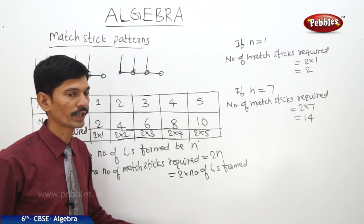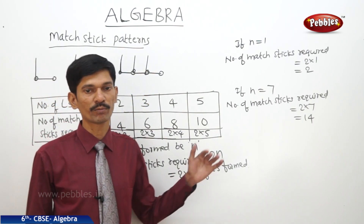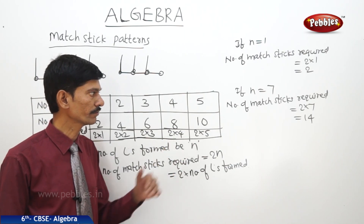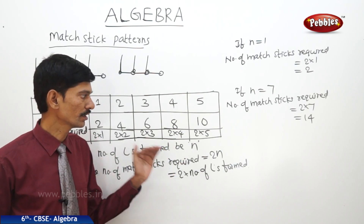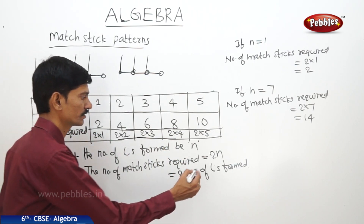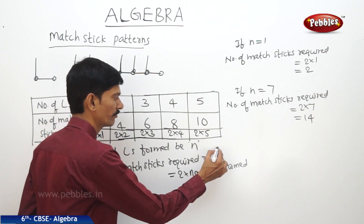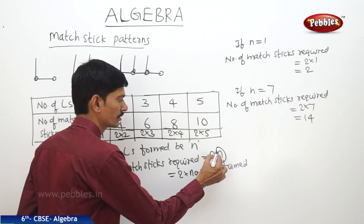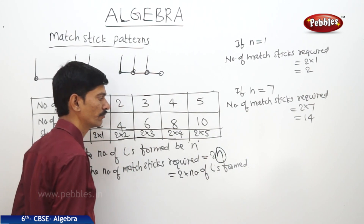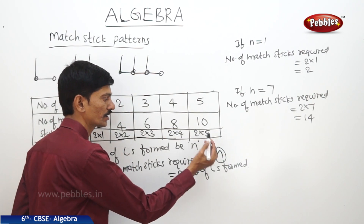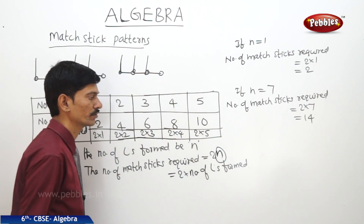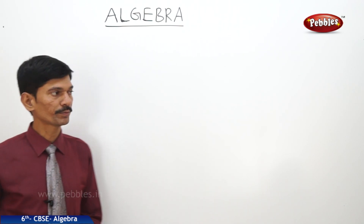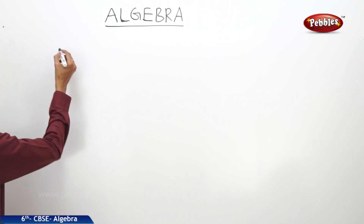So in this way we can find the number of matchsticks required to form any number of L's. Here the variable is N. The variable means something which can change, which can vary. So here N is not any fixed value — it can change. Now let us see the next topic: the idea of a variable.